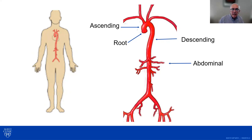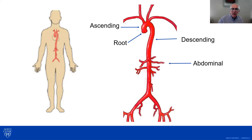The ascending aorta is the segment immediately above the very small and short aortic root. The ascending aorta is curved and terminates in the arch. The arch is where the vessels that go to the upper extremities and to the head arise. Beyond the arch is the descending aorta.